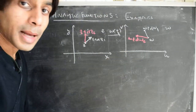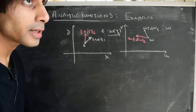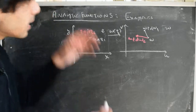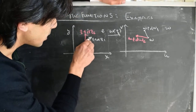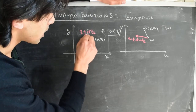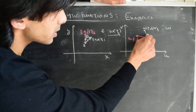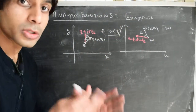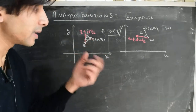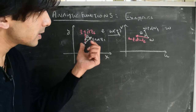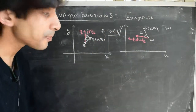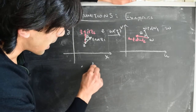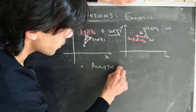For an analytical mapping — one where a unique derivative at the point z exists — if the angle between the vectors in the z-plane is theta, then the angle between the image vectors in the w-plane is also theta. This angle is preserved both in magnitude and in sense: if it's counterclockwise in the z-plane, it's also counterclockwise in the w-plane. This is what leads us to conclude that analytical mappings are also conformal.